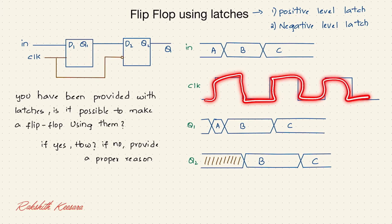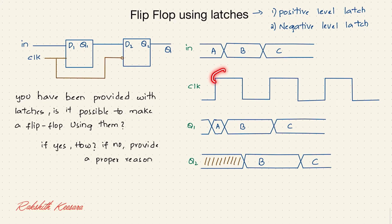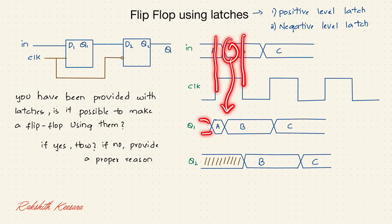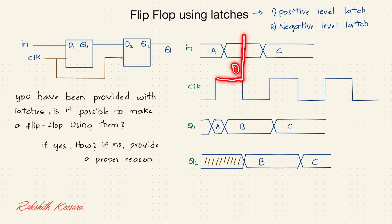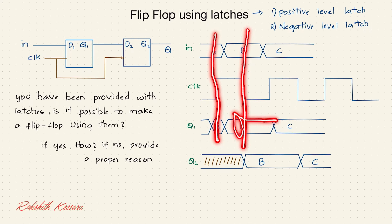This is the clock going to both latches, and this is the input applied. At the positive level, whatever the input is, it propagates to Q1. So Q1 will receive the data — we got A and we also got B. Whatever data is present at the end of the positive level will continue until the next positive level. So at the end there is B, and it continues to the next positive level.